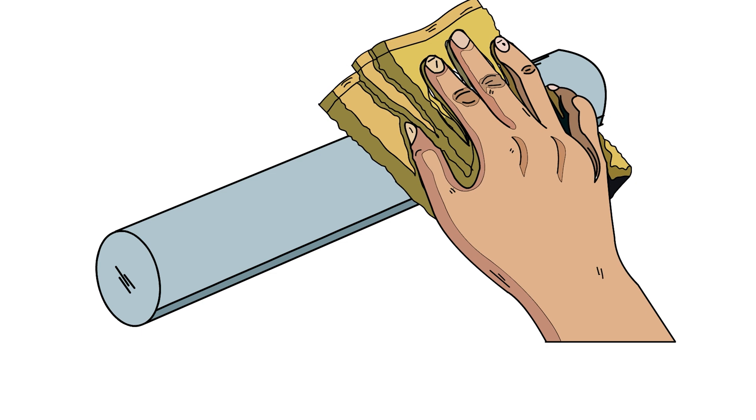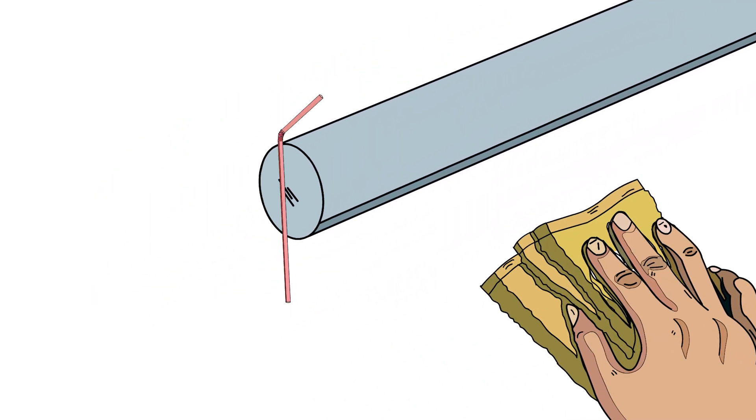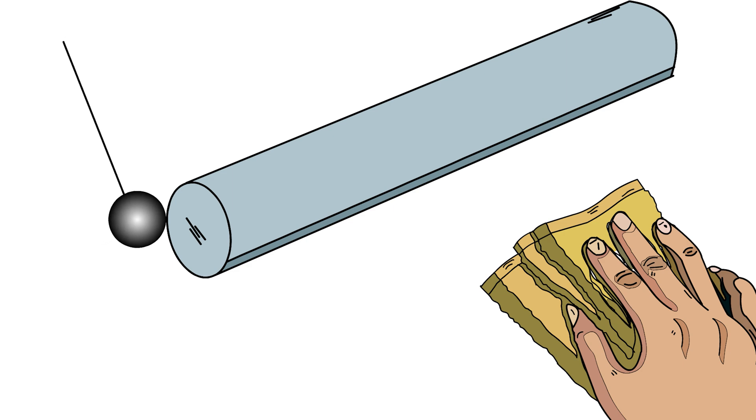Many such pairs of materials were known which on rubbing could attract light objects like straw, pith balls, and bits of papers. You can perform the following activity at home to experience such an effect.